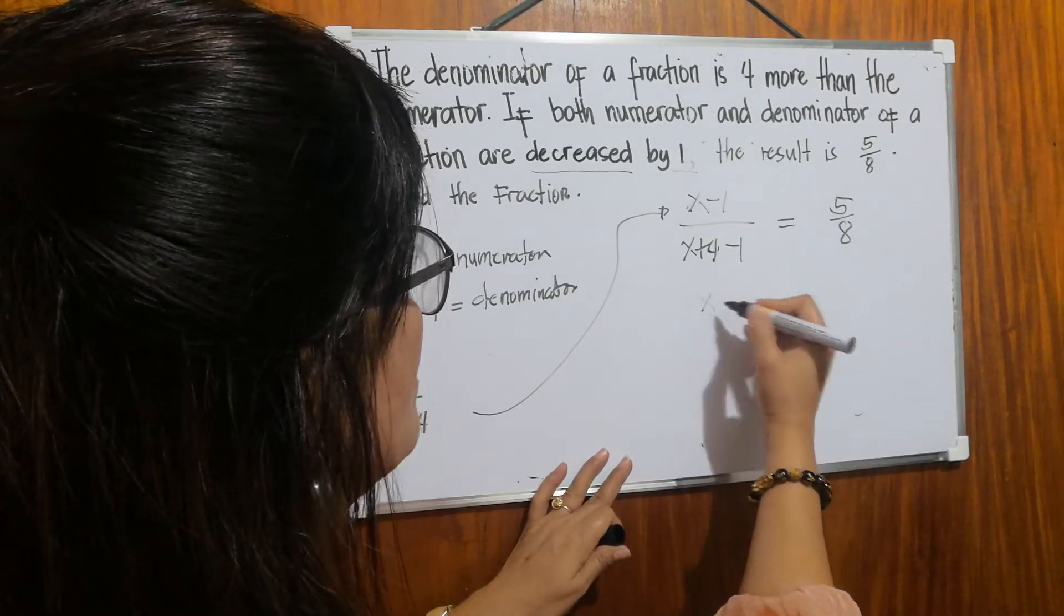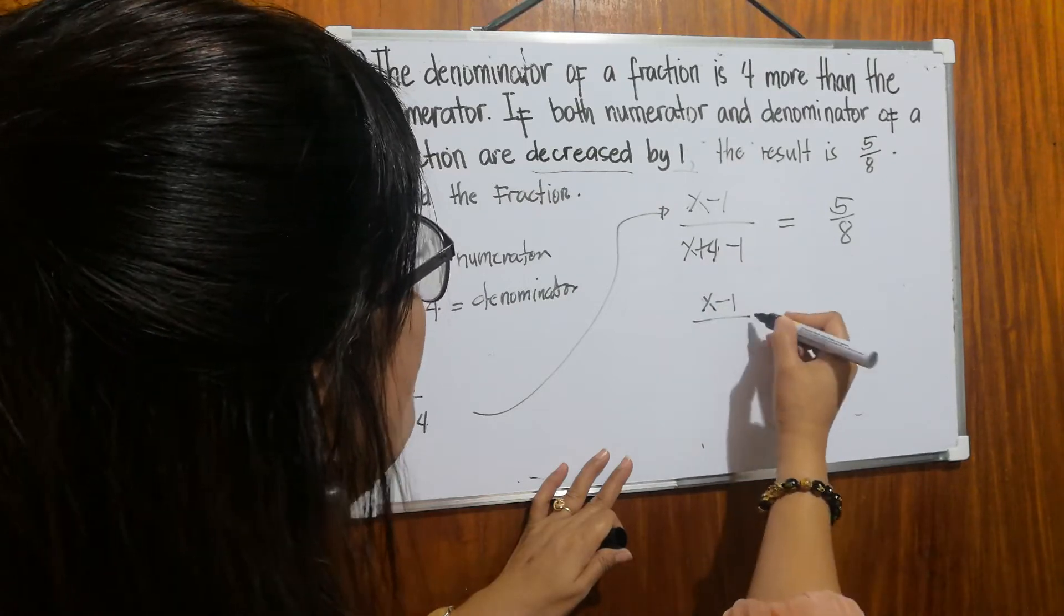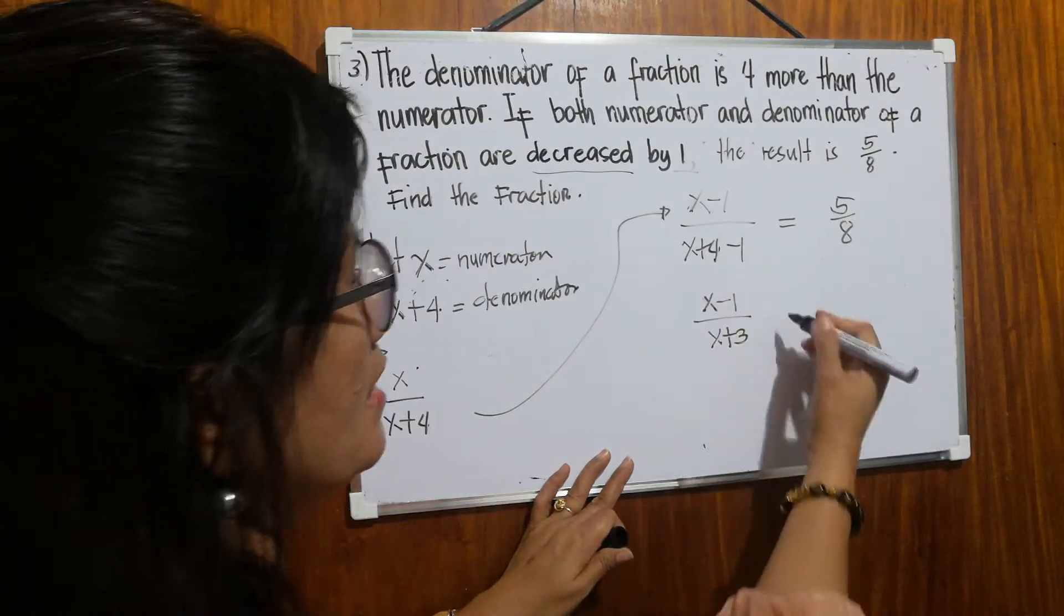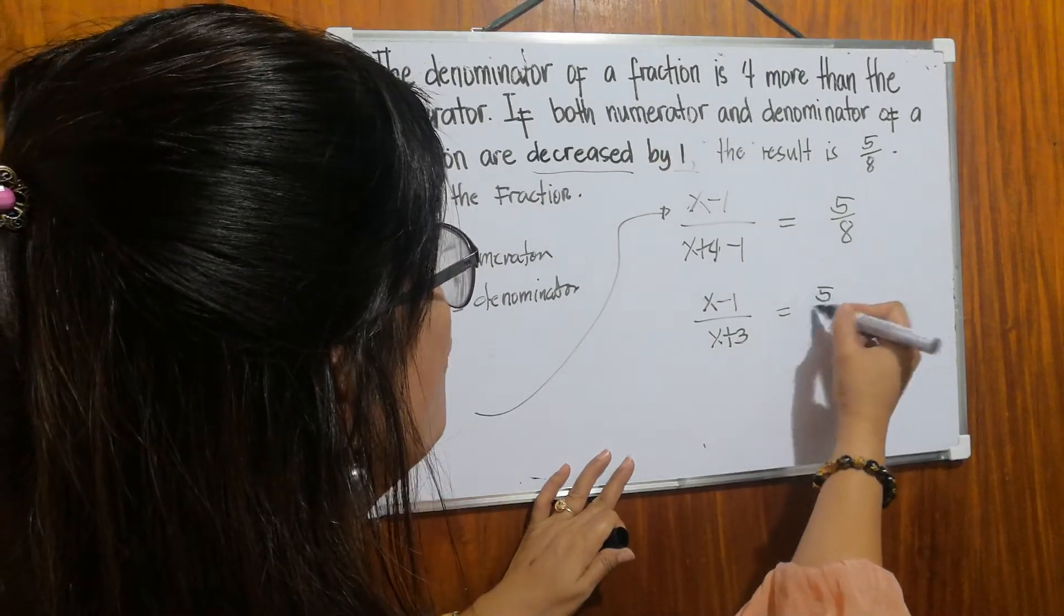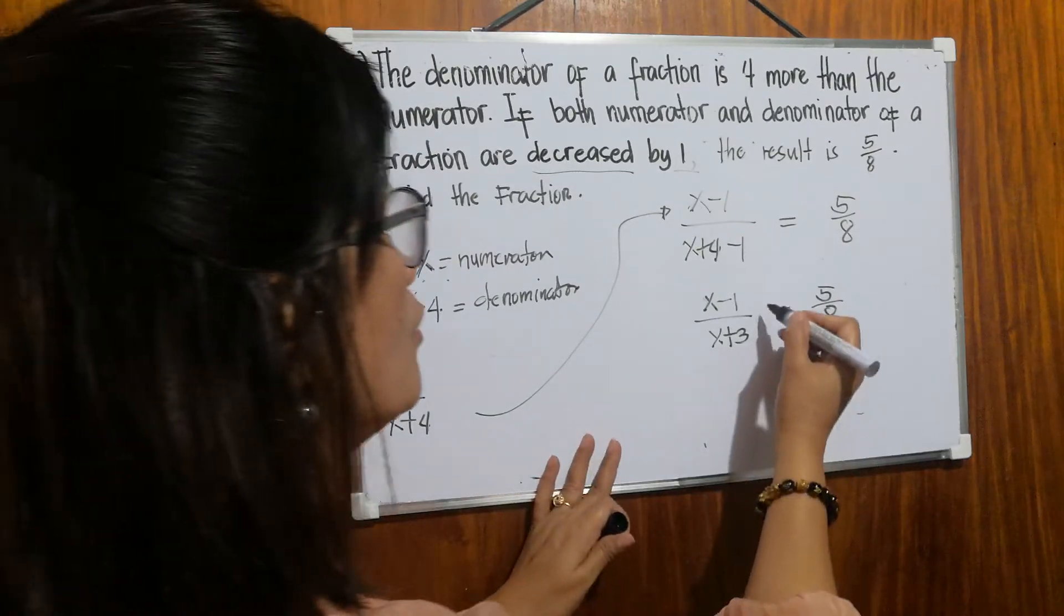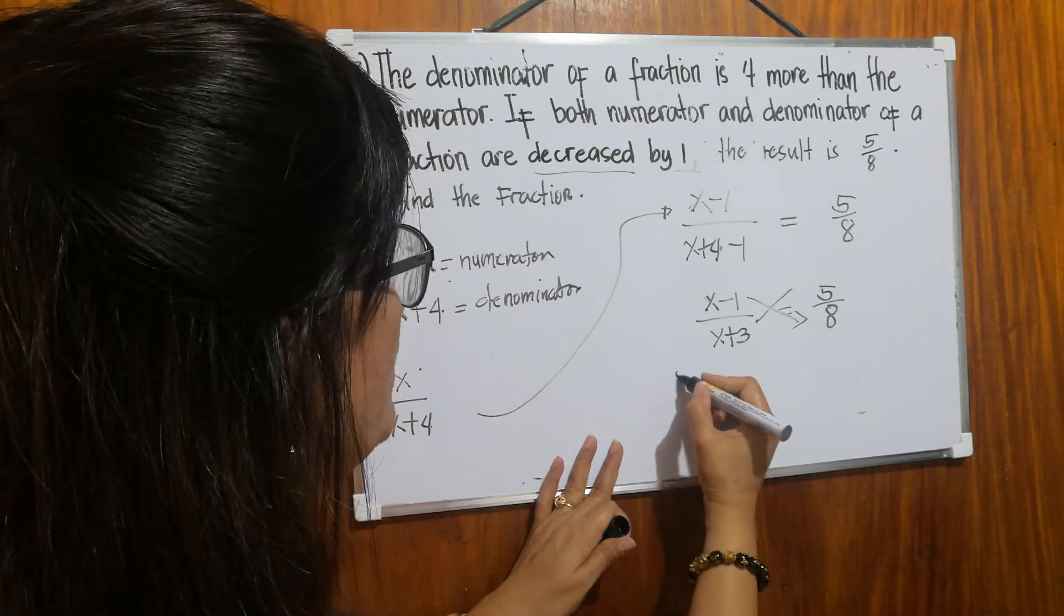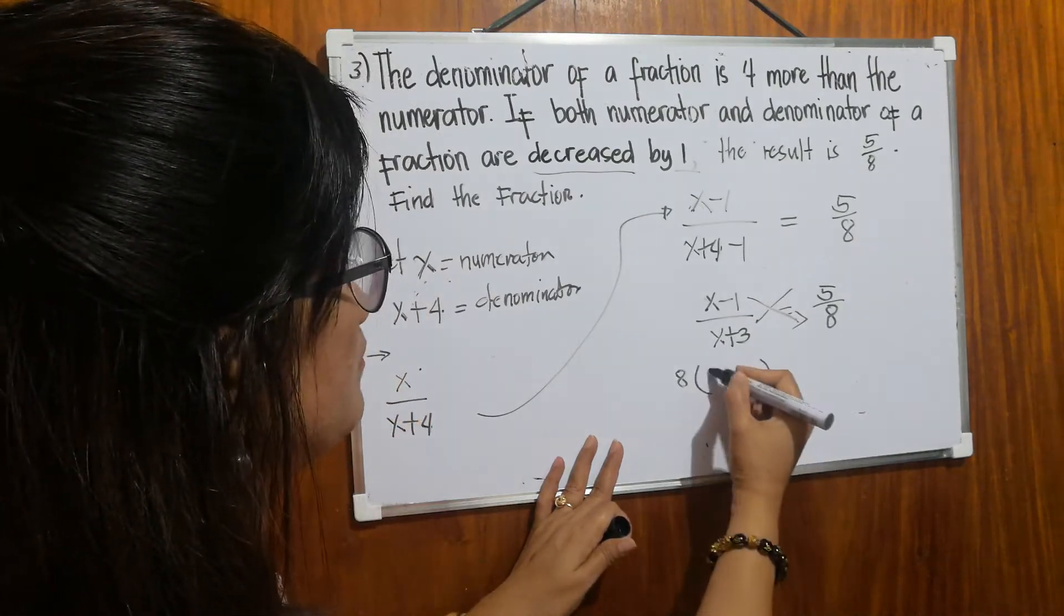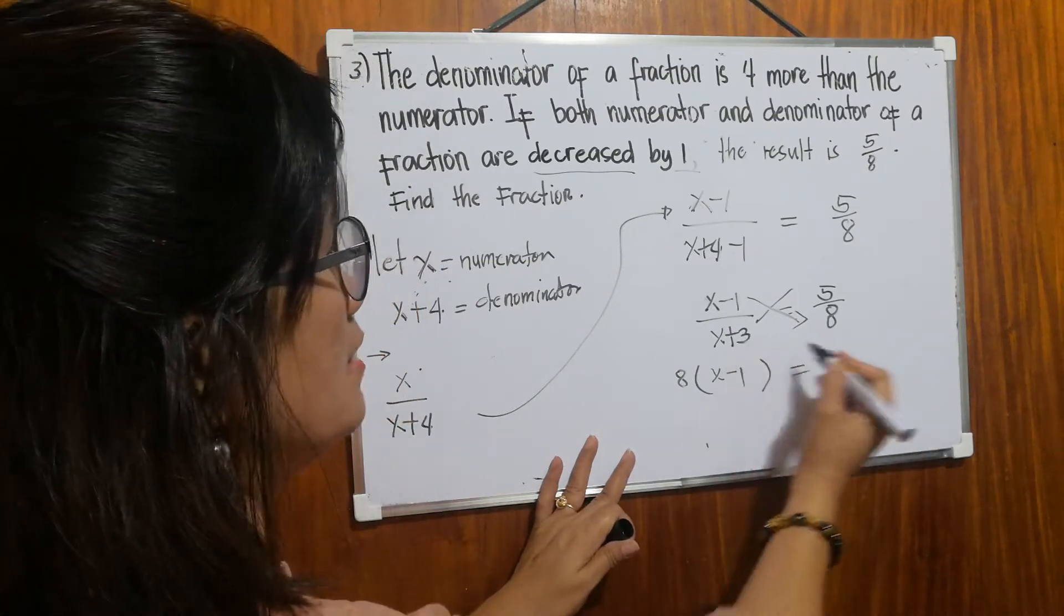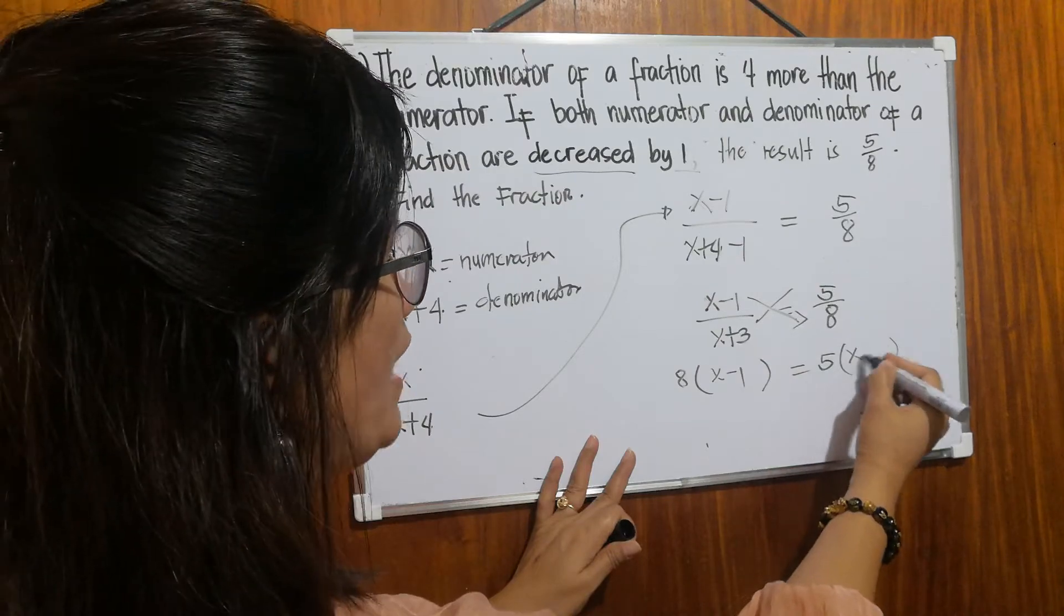So we have x minus one over, all over x plus three, because four minus one equals three, is equal to five over eight. Then, to find x, we will cross multiply. So let's start here. It will be eight times x minus one equals five, or its partner, x plus three.